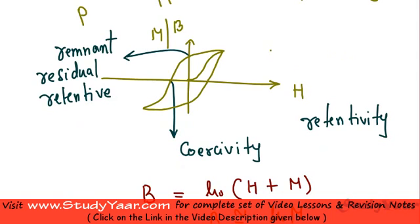As is visible from this graph, there is a complex relationship between M and H for a ferromagnetic material.